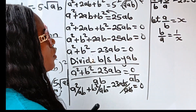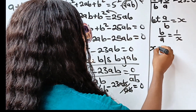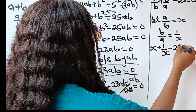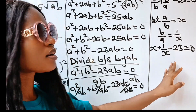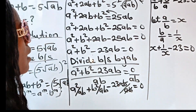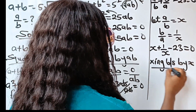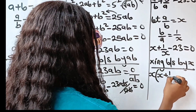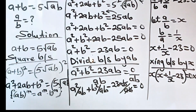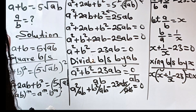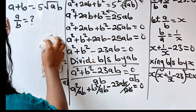Now if we substitute into the equation, we will have X plus 1 over X minus 23 is equal to 0. Let us multiply through by X — multiplying both sides by X. So we have X times X plus X times 1 over X minus X times 23 equals 0.